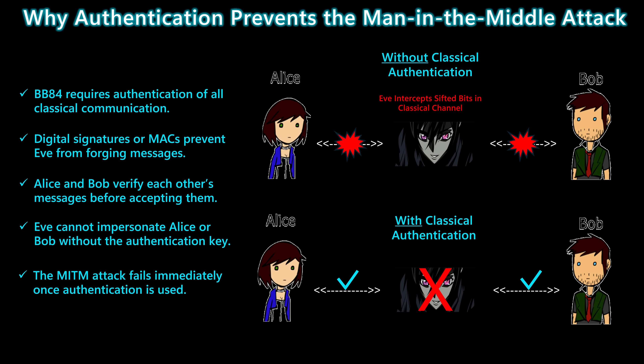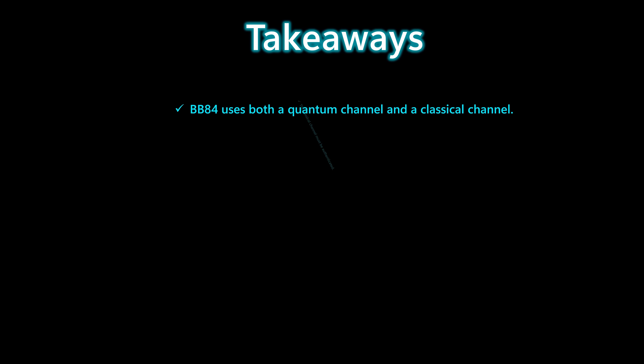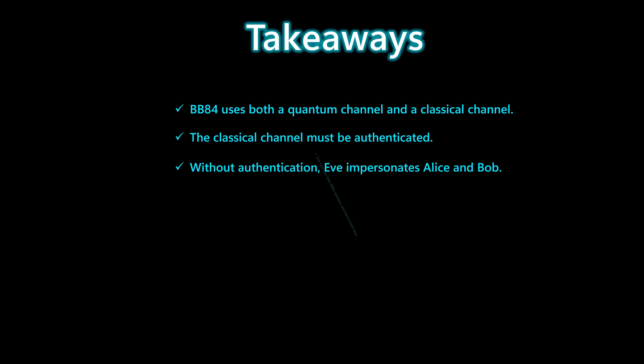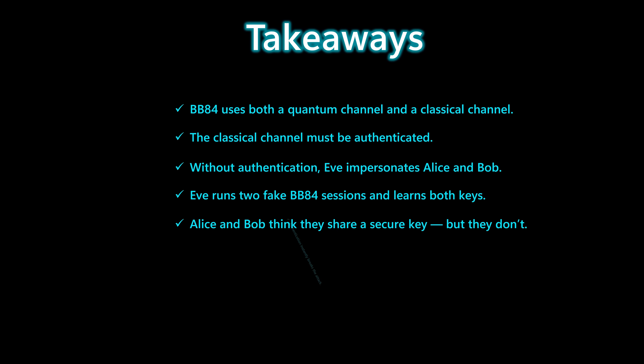With authenticated classical communication, the man-in-the-middle attack fails on the spot. Here are the key points to remember. BB84 uses both a quantum channel and a classical channel, and the classical channel must be authenticated. Without authentication, Eve can impersonate both Alice and Bob, run two fake BB84 sessions, and learn the entire key — all while Alice and Bob believe they're secure.